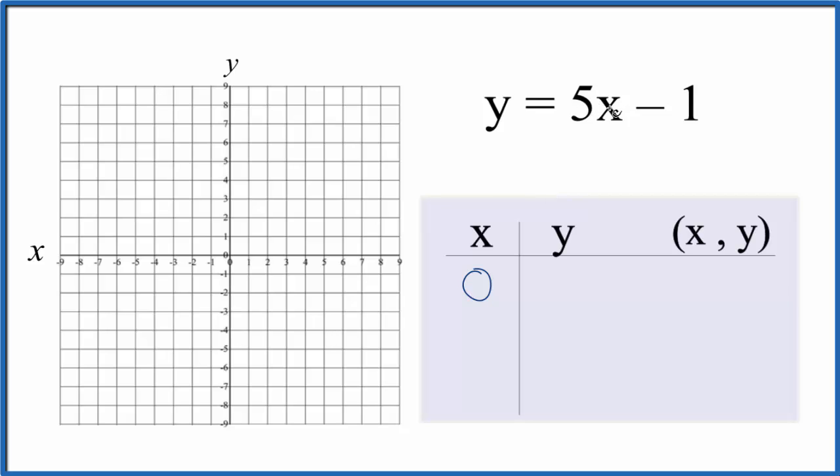How about 0? 5 times 0, that's 0. So we get a negative 1 here for y.